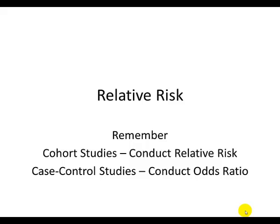This video is intended to help you understand relative risk. It's important to remember we use relative risk when we do cohort studies, because in cohort studies we have a prevalence of disease. All we've done is taken a group of people and, without any manipulation, identified whether they had an exposure or not and then how many of those developed disease. So we're able to conduct a relative risk analysis because it's based on prevalence.